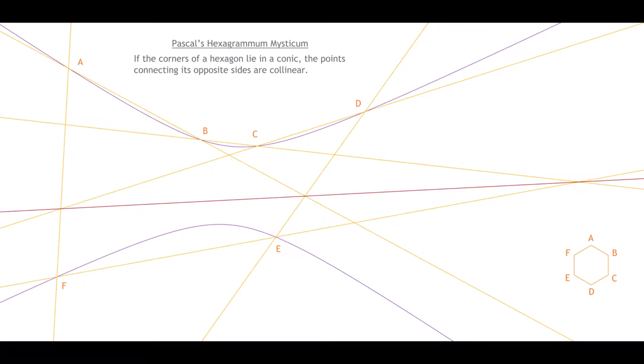Pascal discovered this, but metrically, when he was 16 years old, while the other kids were out jamming on their theorbos or doing whatever the young people were into back then — if, indeed, teenagers had even been invented yet. If the corners of a hexagon lie in a conic — you could also say, given any hexagon inscribed in a conic — the intersections of opposite sides lie in a straight line.